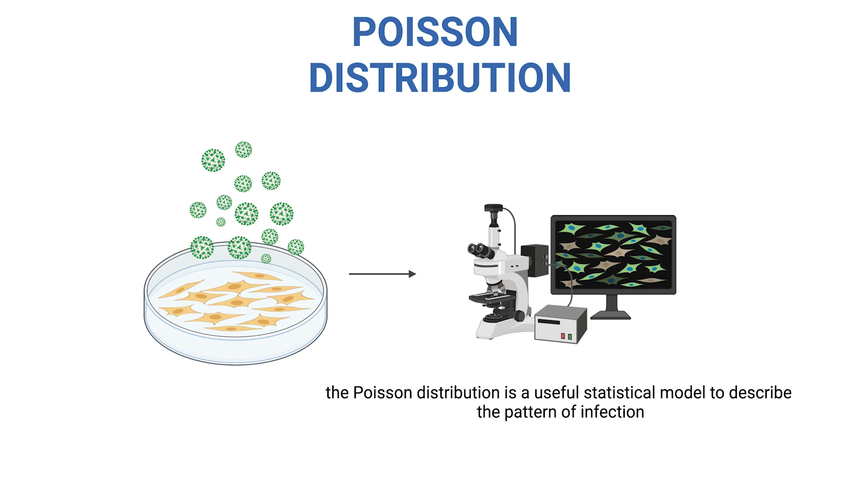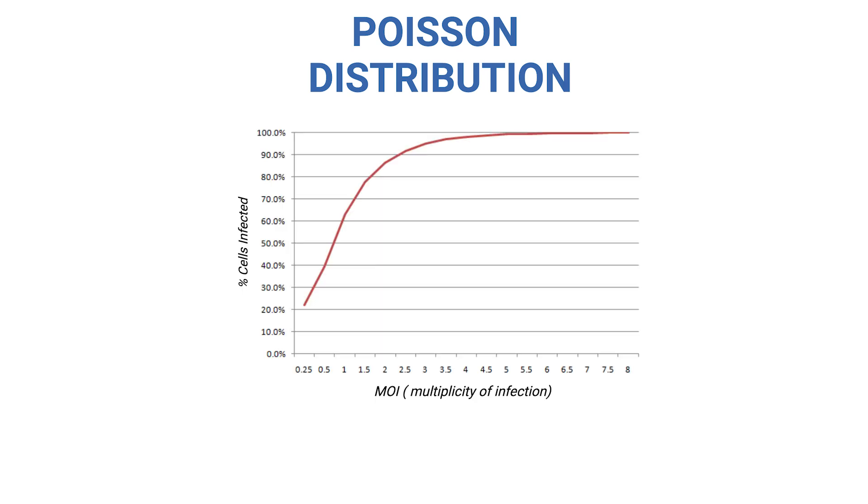Assuming that the cells are fully permissive to the virus and that infecting one cell doesn't interfere with the infection of another, we use a specific graph to visualise this. Let's take a look. Here, the x-axis represents the average number of viruses per cell, and the y-axis shows the probability of that number of infections happening.